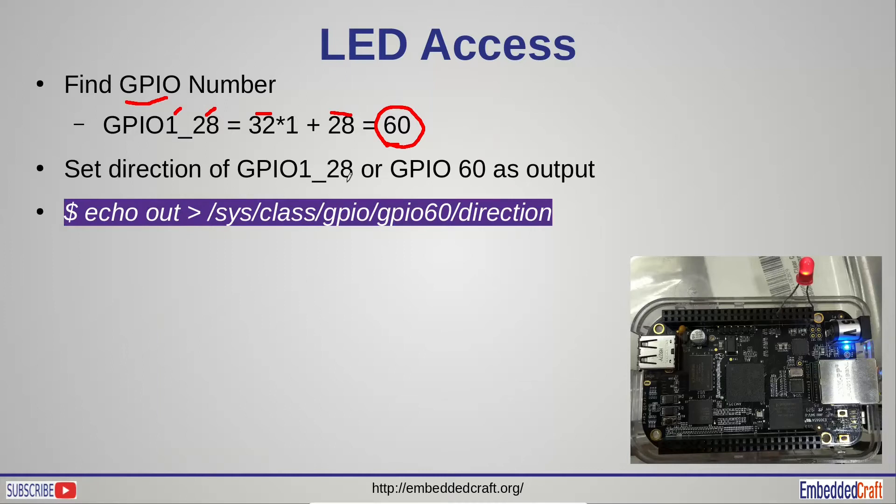First we have to set the direction of GPIO-60 port. For that we have to write out to the direction file. And here is the command. We have to type echo out root sys class GPIO-60 direction.